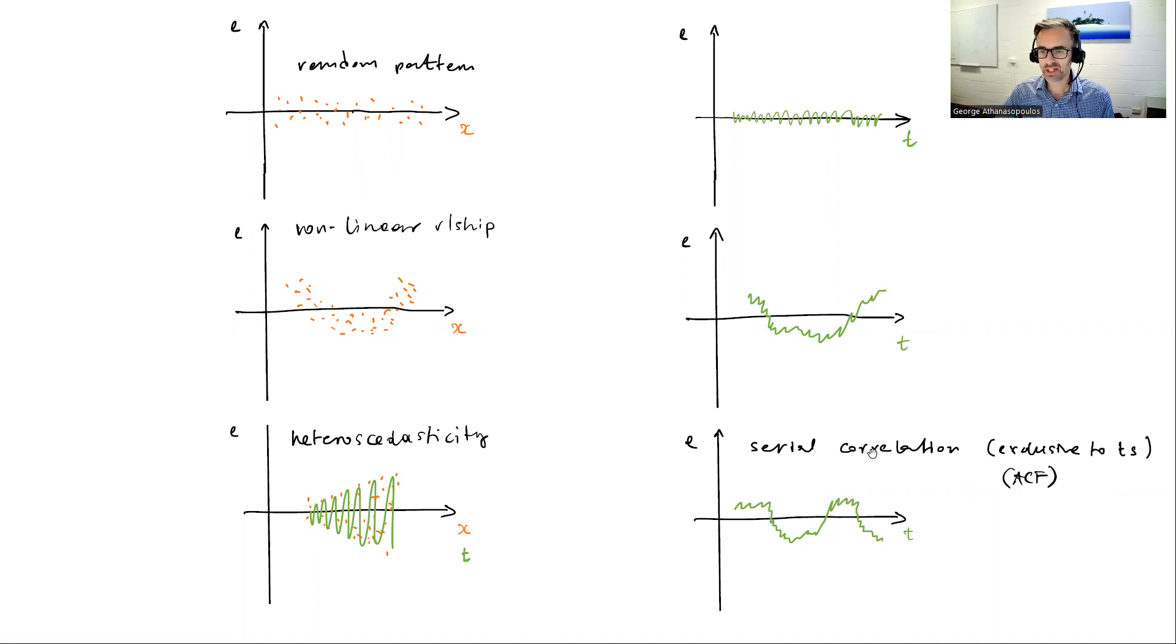Exclusive to time series data is if I plot my residuals against time and I see some patterns such as serial correlation where my residuals hang above the axis or below the axis as if they are not white noise, as if there's some structure left over. Of course, this will be shown in the ACF plot that we're going to look at when we look at the gg_tsresiduals function.